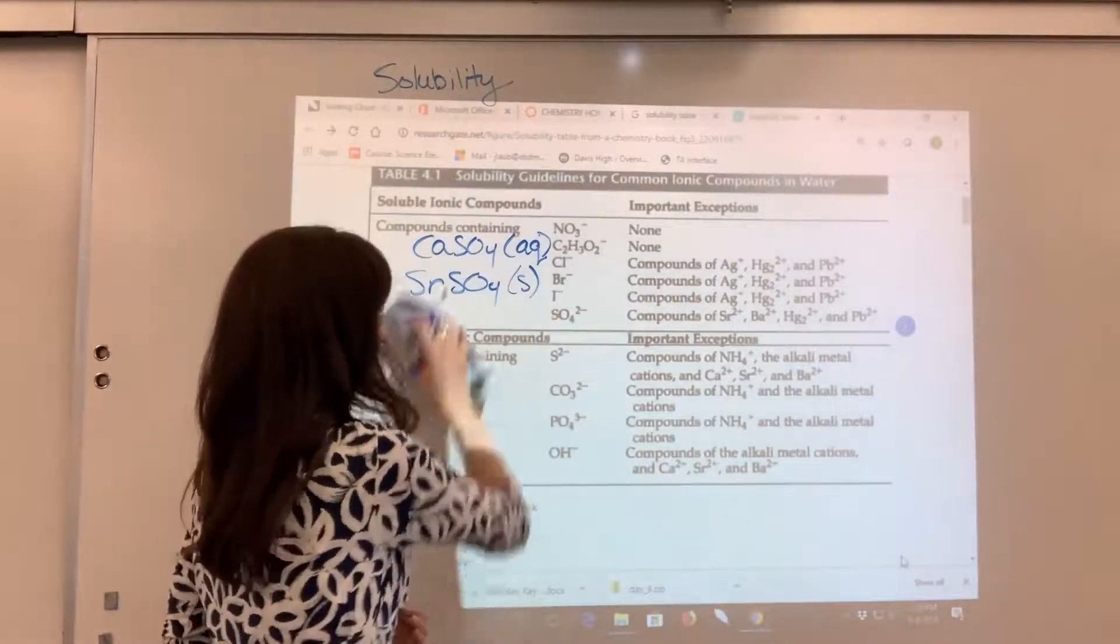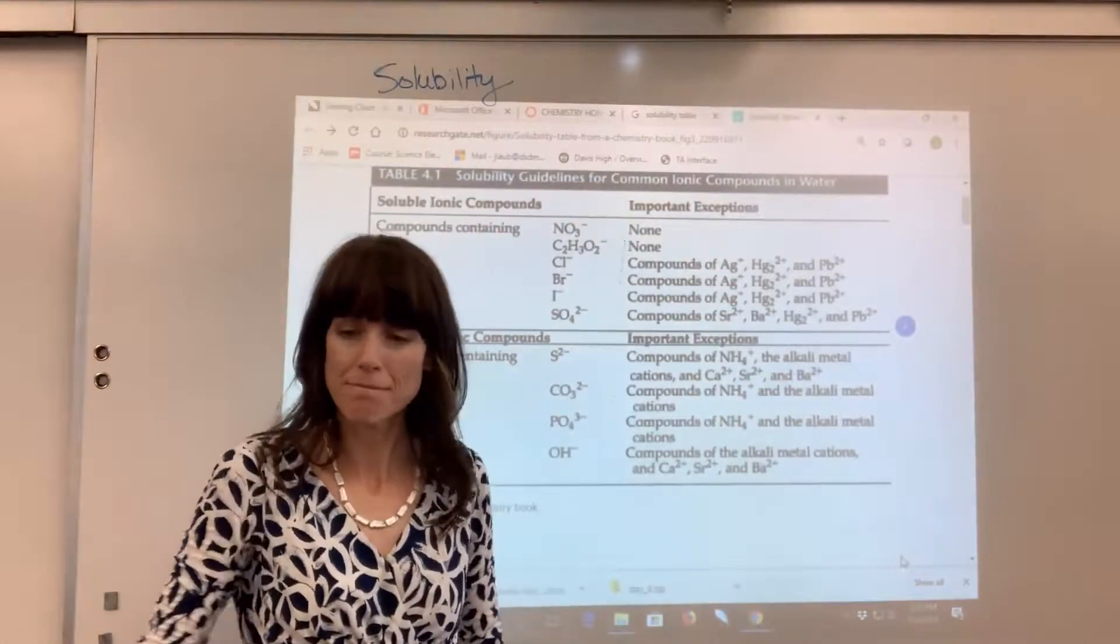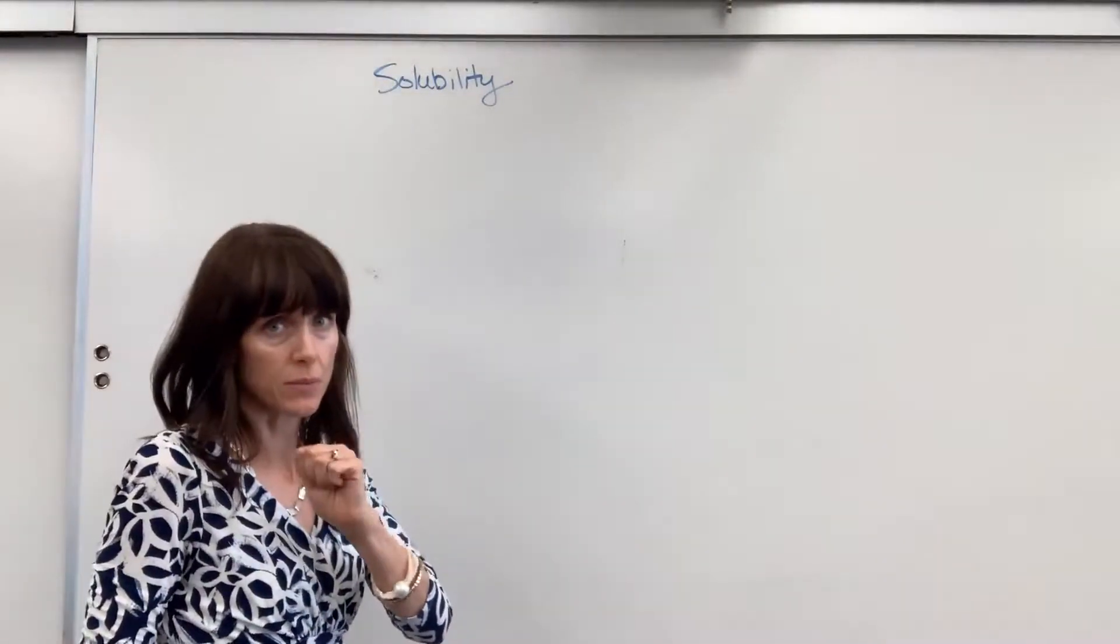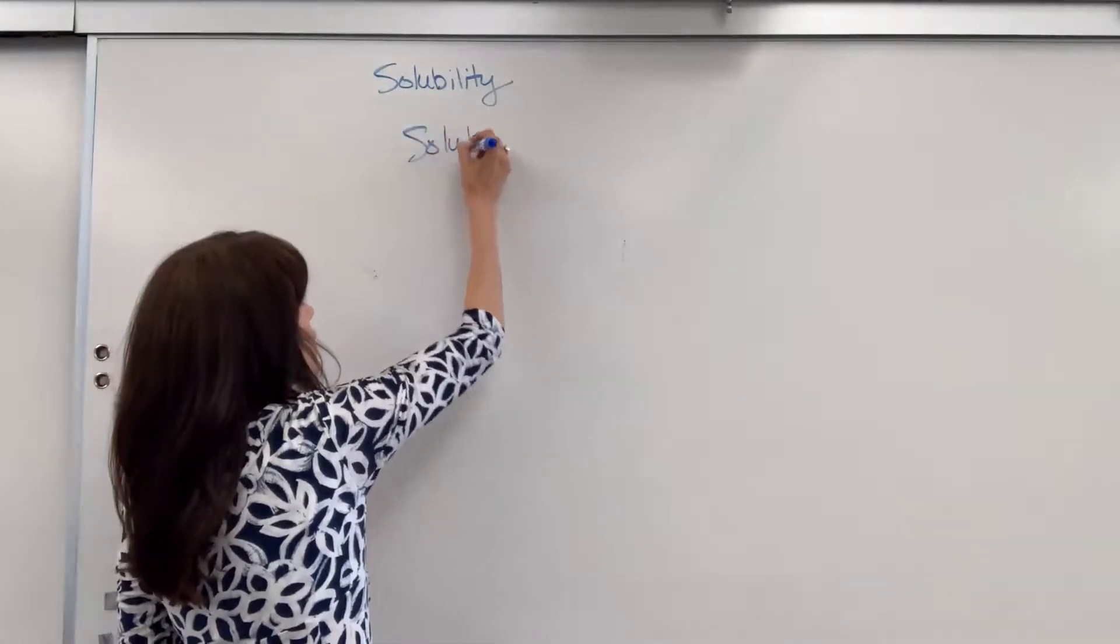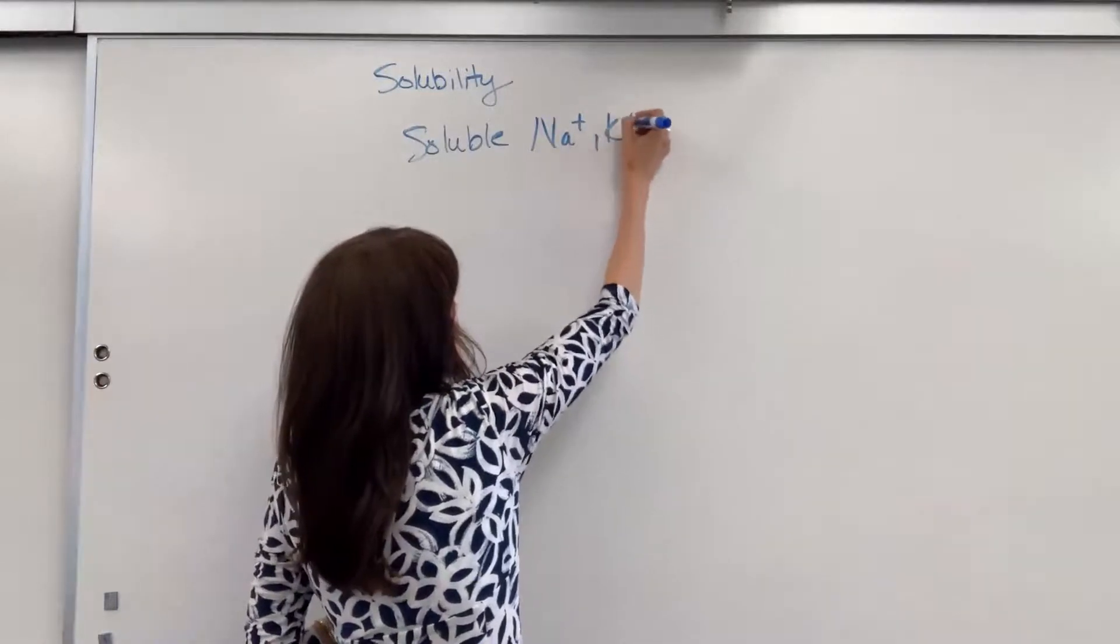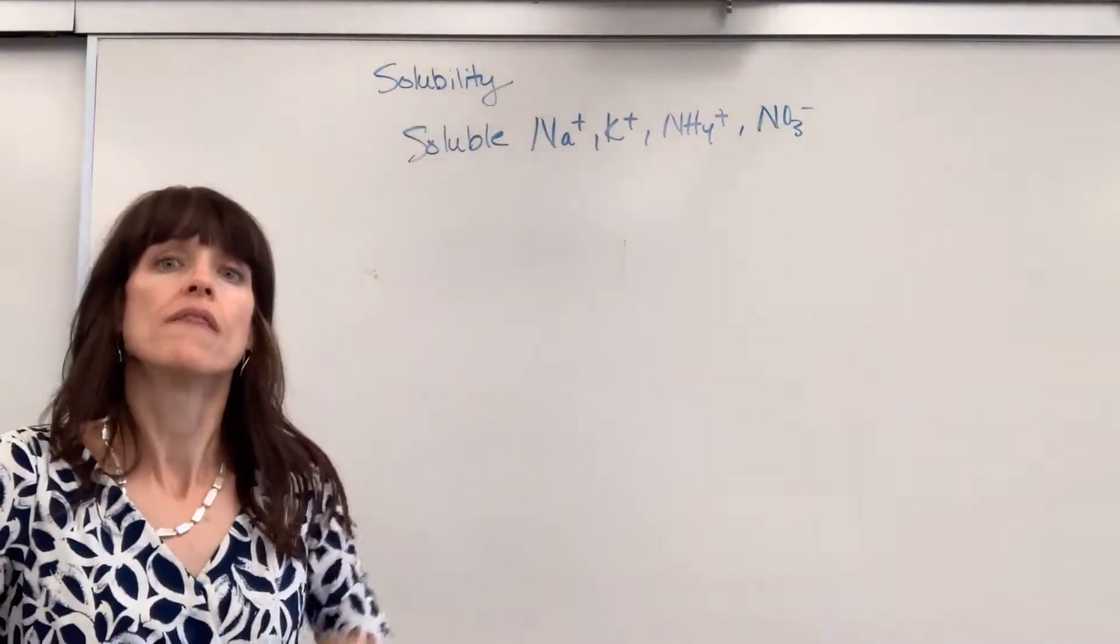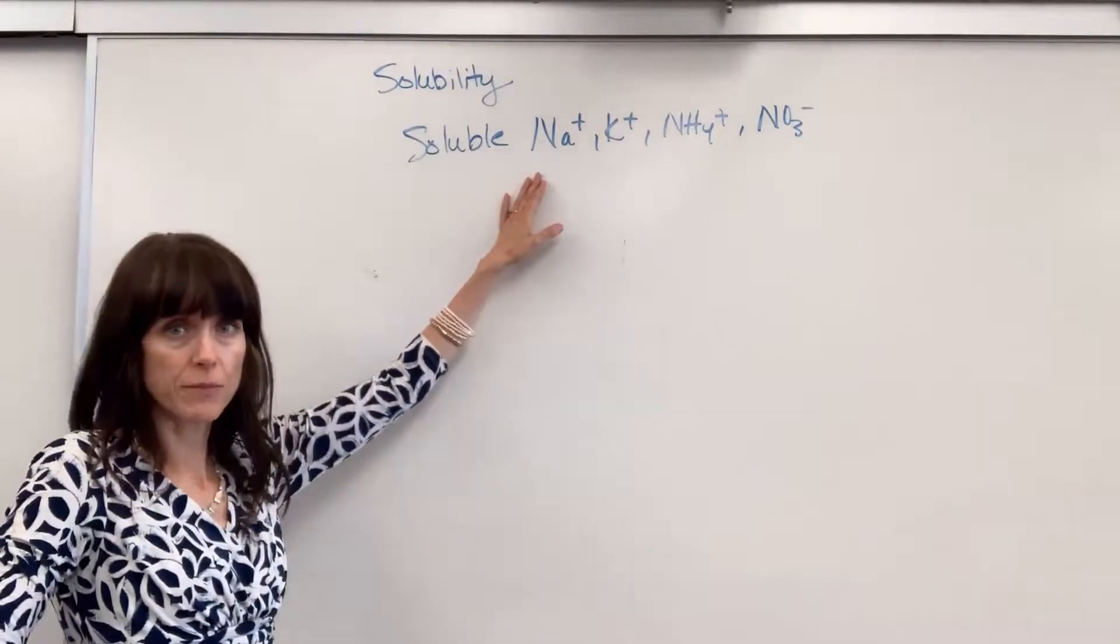Now, I want to predict products with you using this solubility table. One thing, if you are doing AP chemistry, this is what they want you to memorize. There's four rules with solubility that they want you to memorize. Super easy. They want you to know that these four ions are soluble. You have to memorize sodium, potassium, ammonium, and nitrate. If you have any of those ions in a compound, they will be soluble. You put aqueous next to them. That's what AP wants you to have memorized.